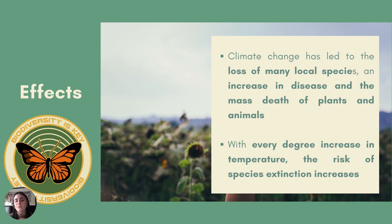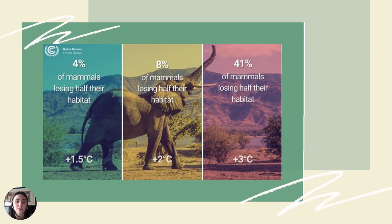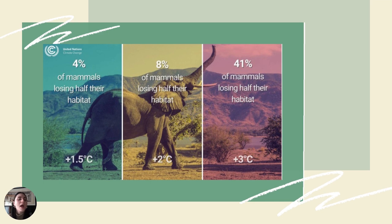We must bear in mind that with every degree increase in temperatures, the risk of species extinction increases. According to the United Nations, with an increase of 1.5 degrees, 4% of mammals will lose half of their habitats. With an increase of 2 degrees, 8% of mammals will lose half of their habitats. And with an increase of 3 degrees, 41% of mammals will lose half their habitats.